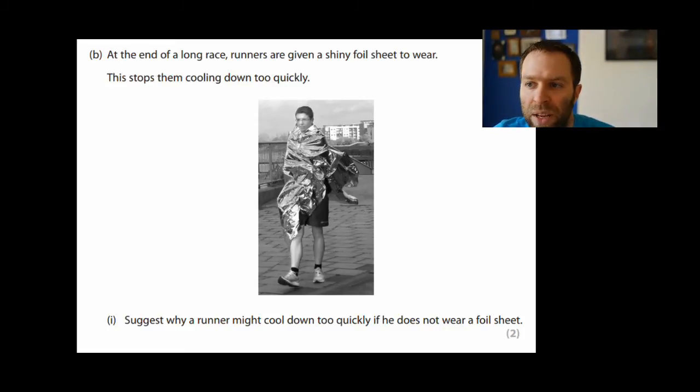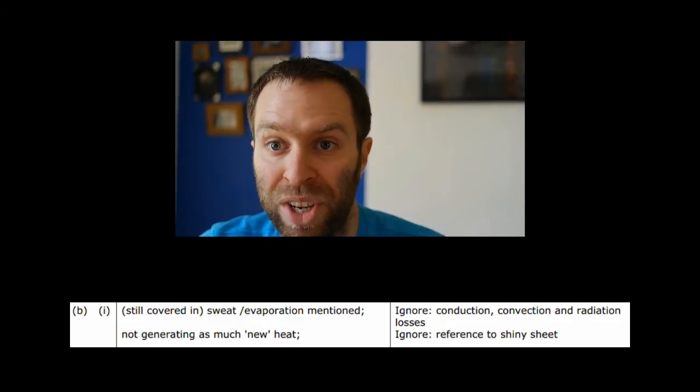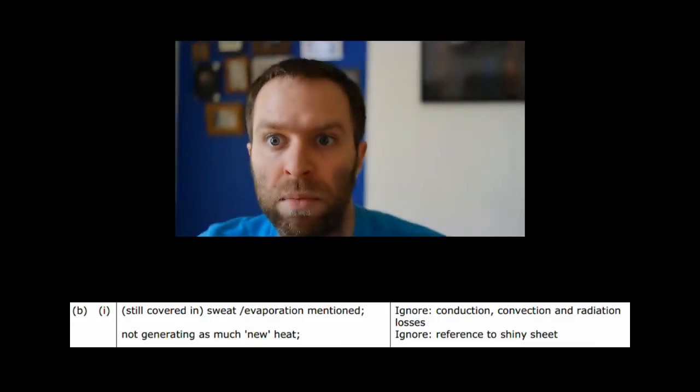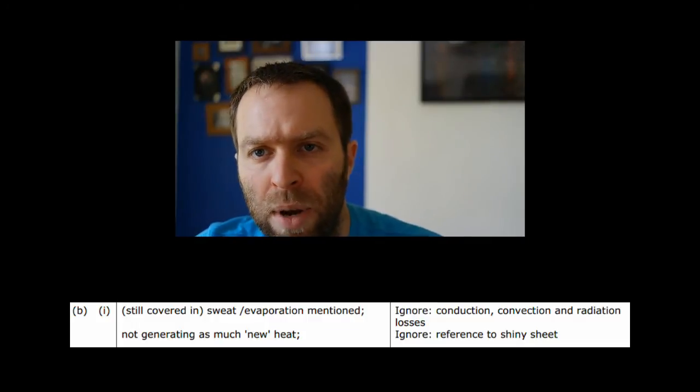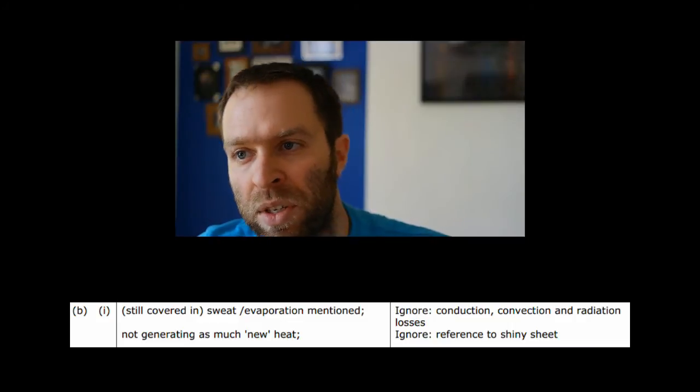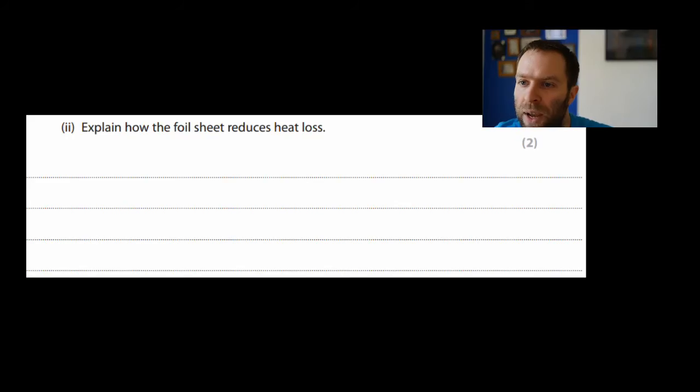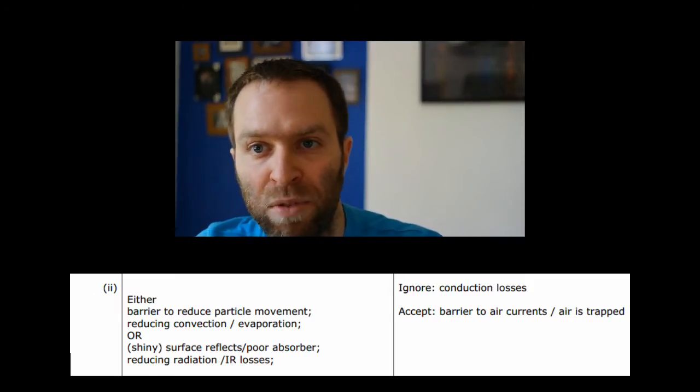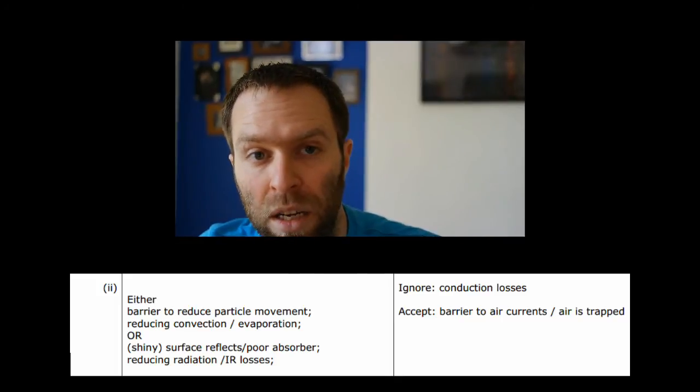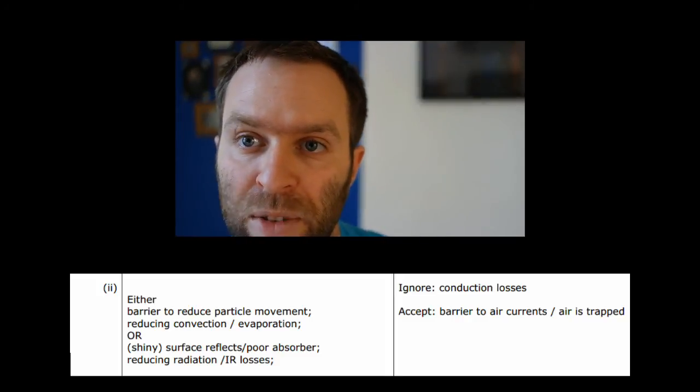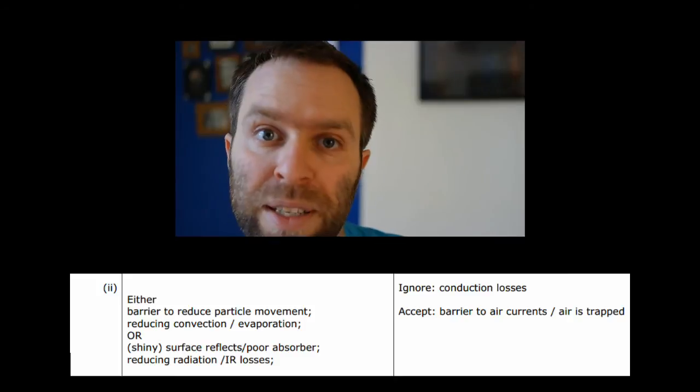The second part of the question asks how a shiny foil blanket could help prevent heat loss. The point here is that the runner has stopped running, so they're not producing as much heat in the first place. They're going to be cooling down and they're covered in sweat. The amount of sweat that they've got on them would evaporate away, and if you've got a blanket on top, you're going to prevent that evaporation happening. You're also going to stop the wind getting to the sweat, which would speed up the evaporation. The very last bit of the question talks about how the foil sheet prevents heat loss. The biggest thing the foil sheet can do to prevent heat loss is to reflect thermal radiation back in. The runners are really hot from running, they're radiating lots of infrared, hits the foil sheet, reflects back in. So it's reducing heat loss by radiation because it's a shiny surface, which makes it a really poor absorber and a very good reflector.